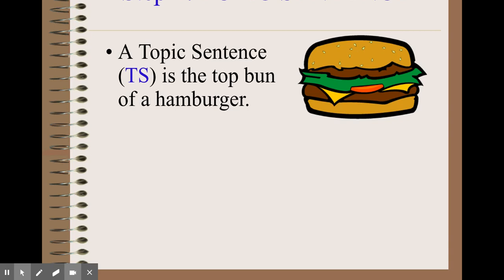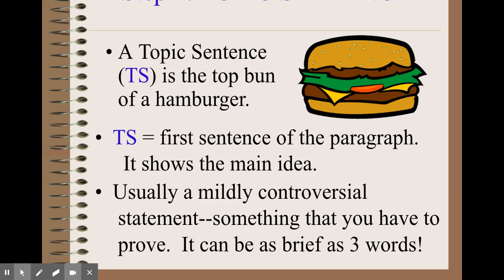The Schaeffer method breaks down your paragraph into separate steps. The first step is the topic sentence. If you think of a paragraph like a hamburger, the topic sentence is like the top bun. We abbreviate topic sentence as TS, so if I say your TS needs to be stronger in feedback, that means your topic sentence needs work. The TS is the first sentence of the paragraph and shows the main idea — broad enough that the rest of the paragraph can relate back to it. You want your topic sentence to be mildly controversial, something that you have to prove.